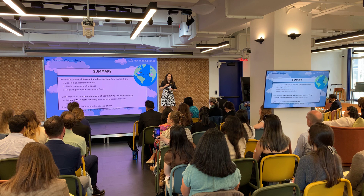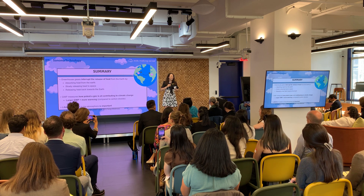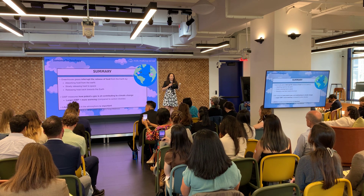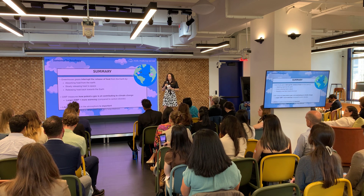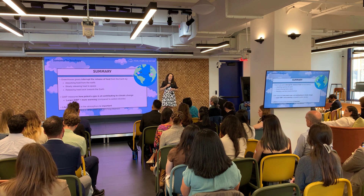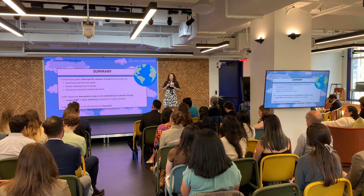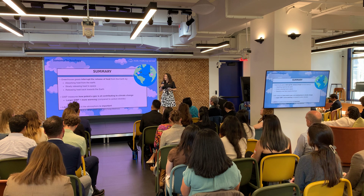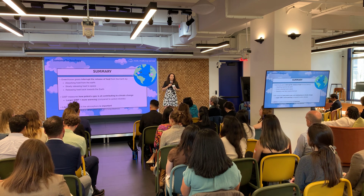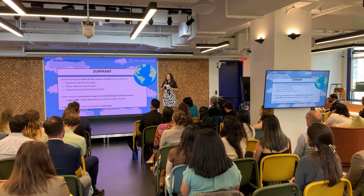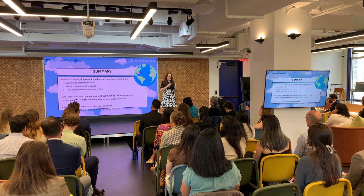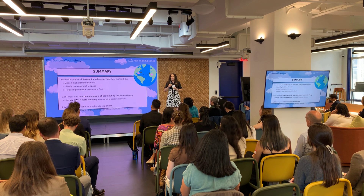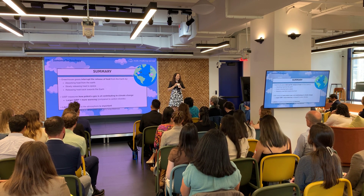To summarize: greenhouse gases interrupt the release of heat from the Earth in three ways — absorbing heat from the Earth, slowly releasing it to space, and releasing that heat back towards the Earth. Global warming potential is a measure of how potent a gas is at contributing to climate change; the larger the value, the more warming compared to CO2. Lifetime of gases in the atmosphere is really important, and some gases have both a large global warming potential and a long lifetime. Hopefully that taught you a little bit about global warming potential.